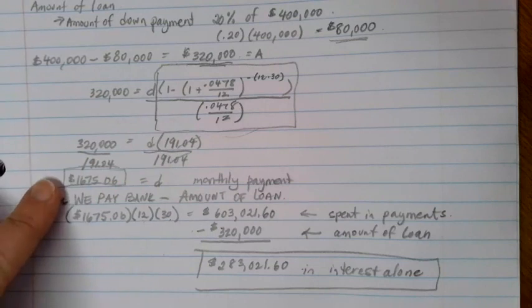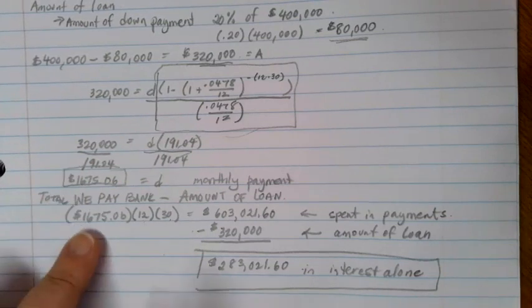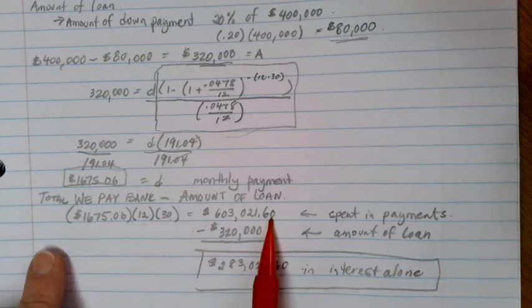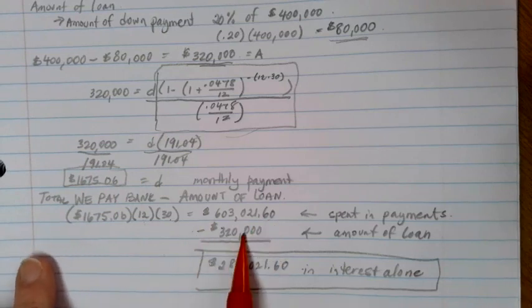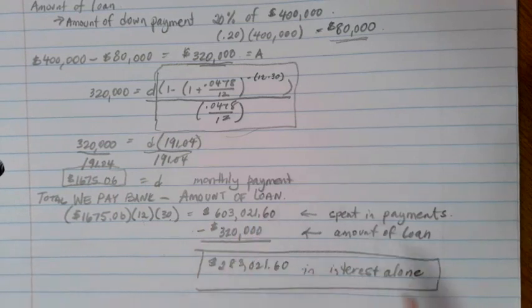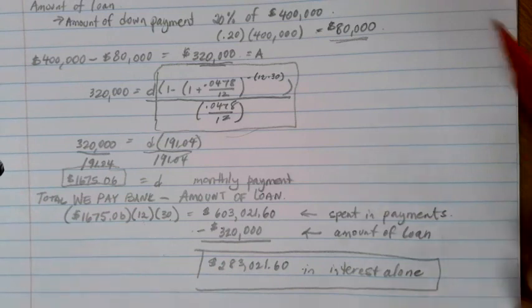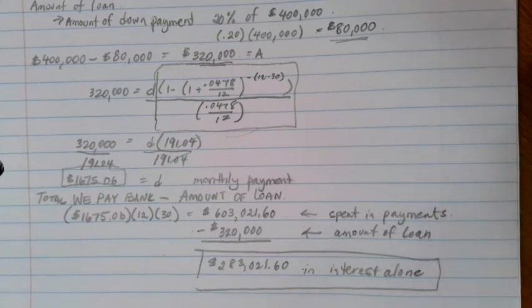We're going to use and find the monthly payment. And then once we know the monthly payment, we can figure out how much we paid altogether over that period of time. And then we're going to subtract how much we borrowed. This is going to be true for a car payment, furniture payment, any type of loan, as well as, of course, our house payments.